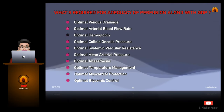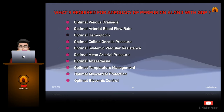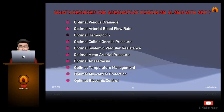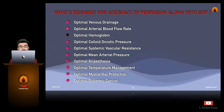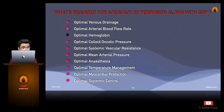Is GDP alone enough? No. Along with the GDP blood flow rate, we can achieve our goal by maintaining optimal venous drainage, optimal arterial blood flow rate, optimal hemoglobin, optimal colloid oncotic pressure, optimal systemic vascular resistance, optimal mean arterial pressure, optimal anesthesia, optimal temperature management, optimal myocardial protection, and optimal glycemic control. With all these things coupled with goal-directed perfusion blood flow rate, we can surely achieve the adequacy of perfusion, which will definitely benefit the patients.